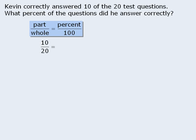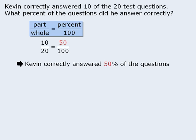Our goal is to express 10 out of 20 as a percent. One way to do this is to find an equivalent fraction where the denominator is 100. If we can do this, then the numerator will be the percentage. Since 50 over 100 is equal to 10 over 20, we can say that Kevin correctly answered 50 percent of the questions.